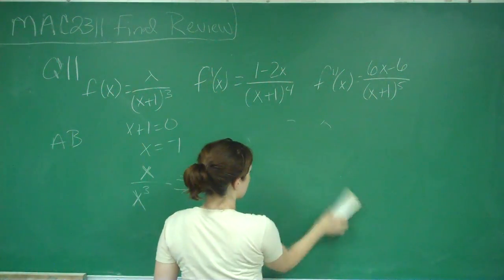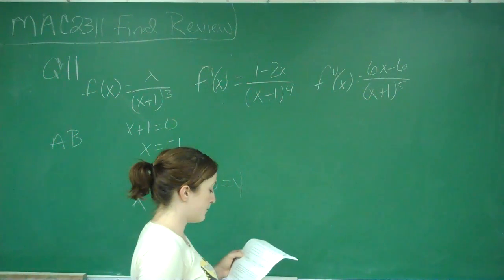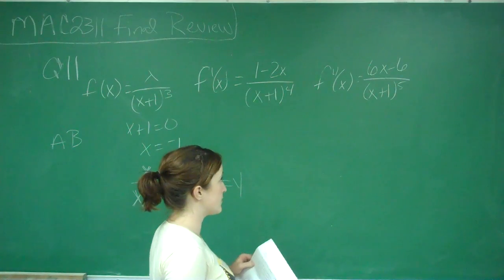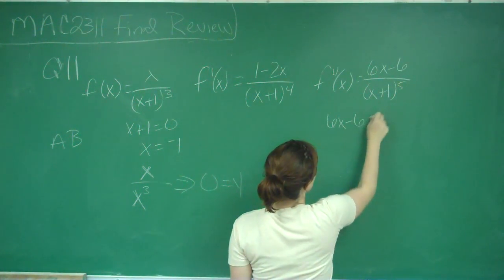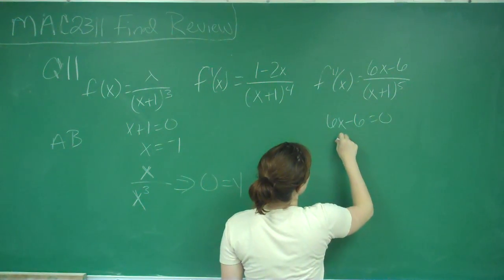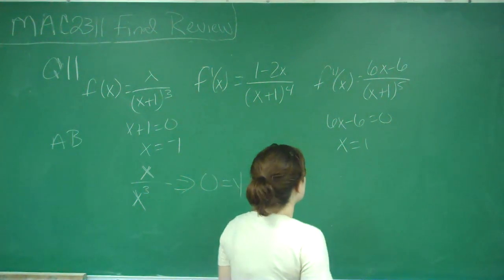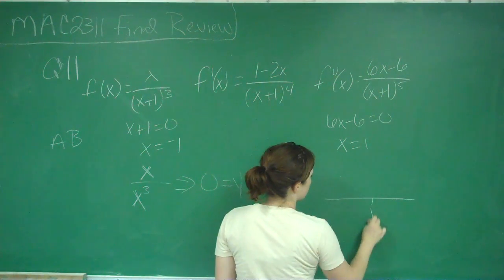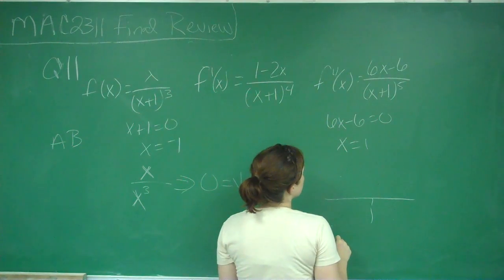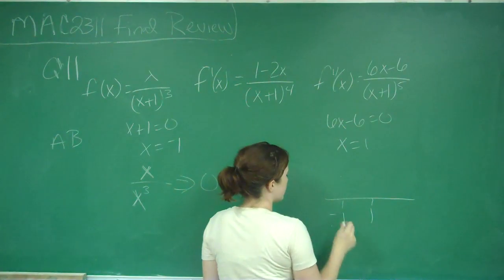For C, it says that f of x has an inflection point only at x equals 1. So we're going to set the top equal to 0, and we would get that x equals 1. We'd add 6 and divide by 6, and we'd get x equals 1. So I'm going to add that 1. And if we set our denominator equal to 0, we get negative 1.